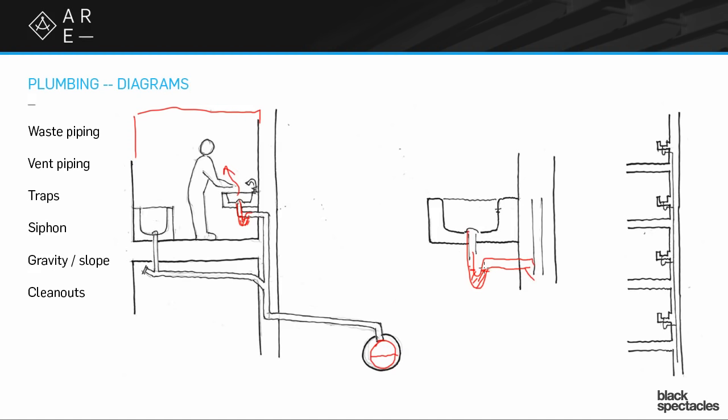People often assume that the trap is actually there in order to trap like wedding rings and things like that that fall down the sink. That's a handy addition that you can get out of a trap. It also stops some of the gunk from getting into the main system and causing problems elsewhere. But the main purpose of it is to trap the water that then traps the sewer gases from coming out into the space. So as I said, this is a really clever idea that somebody came up with hundreds of years ago.